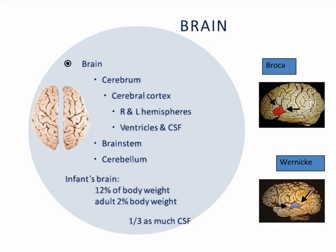Therefore, damage to one side of the brain will affect the opposite side of the body. In the 1860s and 1870s, two neurologists — Paul Broca and Carl Wernicke — observed that people who had damage to a particular area on the left side of the brain had speech-language problems, whereas people with damage on the right side usually didn't. The two language areas of the brain are named after those neurologists: the Broca area and the Wernicke area.